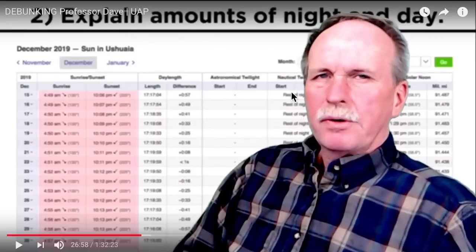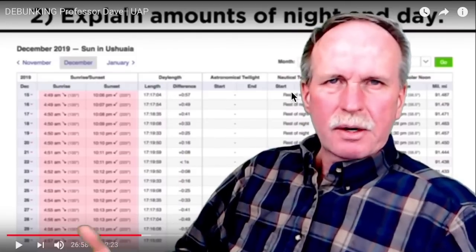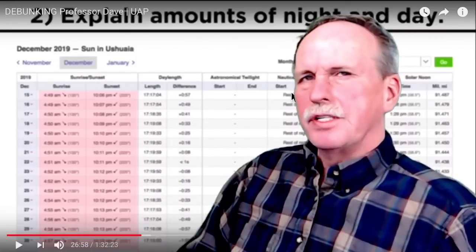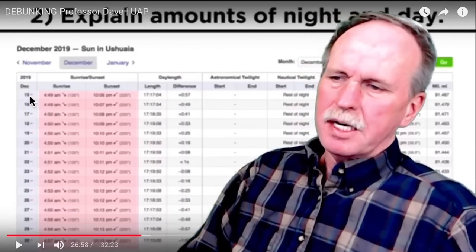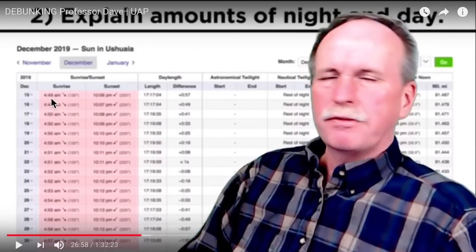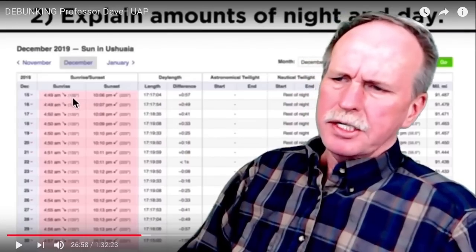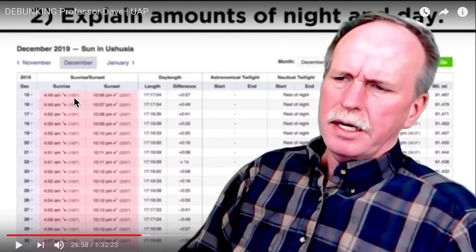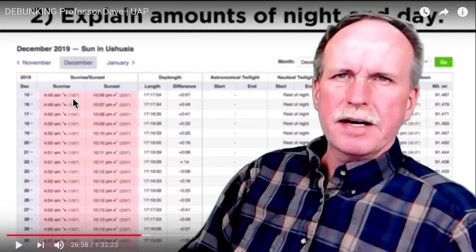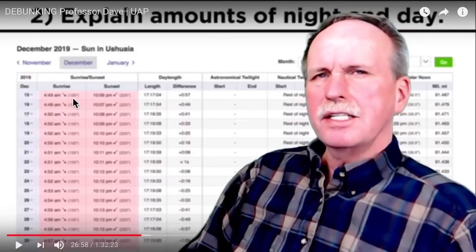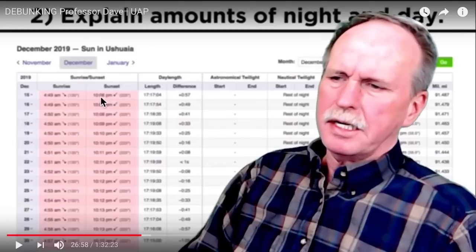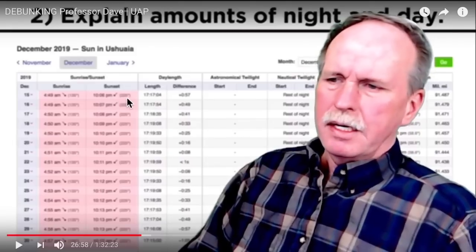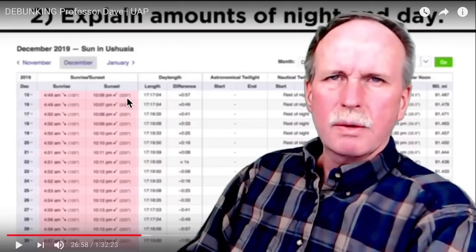I've pointed this out before and I don't think Dave did, so I'm going to kind of supplement Dave's information a little bit with this. Here's the sun. On December 15th, it rises at 4:49 a.m. But notice that it rises at a bearing of 135 degrees. That is south of 90 degrees.